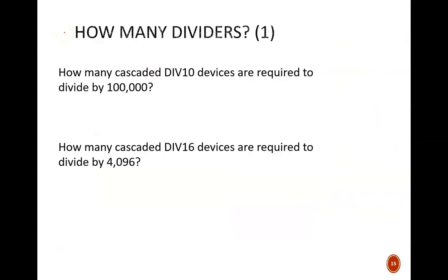In these next two slides, we have some short calculations to demonstrate how we can match a divide by x counter to the particular frequency division needed. First, how many div 10 devices, or decade counters, are required to divide by 100,000? Pause the video and see if you can figure it out. Well, one div 10 would divide by 10, the next one in series divides by 100, the next one by 1,000, the next one by 10,000, and another one makes 100,000. So, five counters are needed in total.